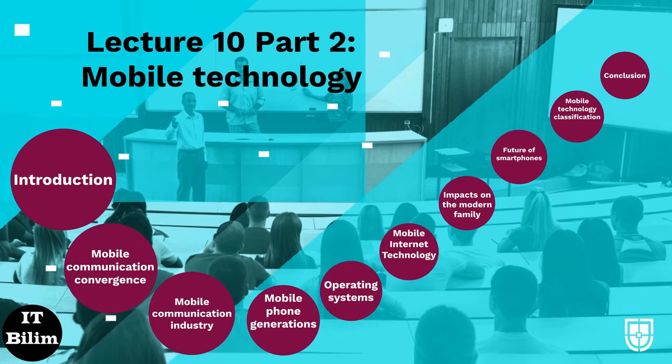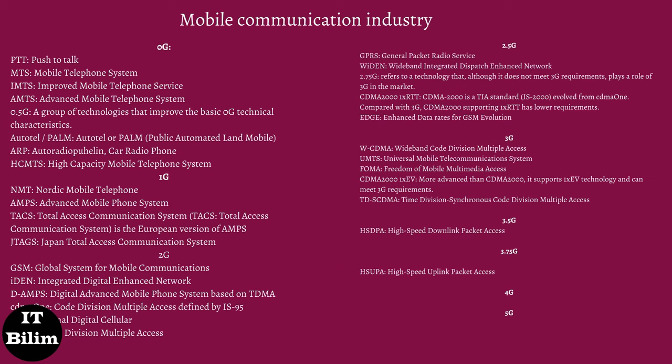Mobile communications industry: Zero-G, an early cellular mobile phone technology that emerged in the 1970s. At this time, although briefcase-type mobile phones had appeared, they still generally needed to be installed in a car or truck. Technologies included Push to Talk, Mobile Telephone System, Improved Mobile Telephone Service, Advanced Mobile Telephone System, and a group of technologies that improve the basic zero-G technical characteristics. Autotel/POM (public automated land mobile), ARP (Autoradiopuhelin, car radio phone), and HCMTS (high-capacity mobile telephone system). 1G refers to the first generation of wireless telephone technology, namely cellular portable wireless telephone, introduced in the 1980s as analog cellular portable radio telephone standards.